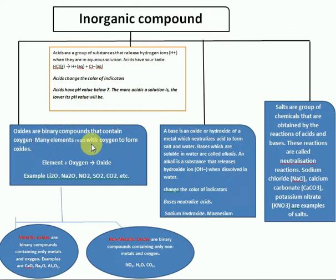All binary compounds are not oxides, but all oxides are binary compounds. Oxides are binary in nature because they are binary oxides. For H₂S, if hydrogen is not an oxide — the binary compound must contain oxygen to be an oxide.